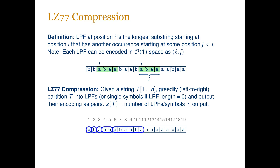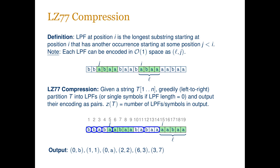In the example, suppose we have already partitioned the string up to position 11. At this point we take the LPF at position i, which is a substring of length 3 starting at position i with an earlier occurrence at position 7, and encode it as a pair containing length and position of the earlier occurrence. Next we look at position 15: the LPF has length 5 and an example occurrence starts at position 5, so we append the pair (5, 5) to the output. The value of z(T) for this string is 7, as the output consists of 7 pairs.